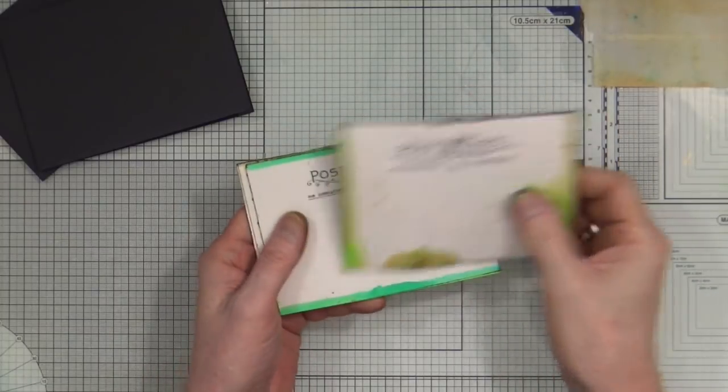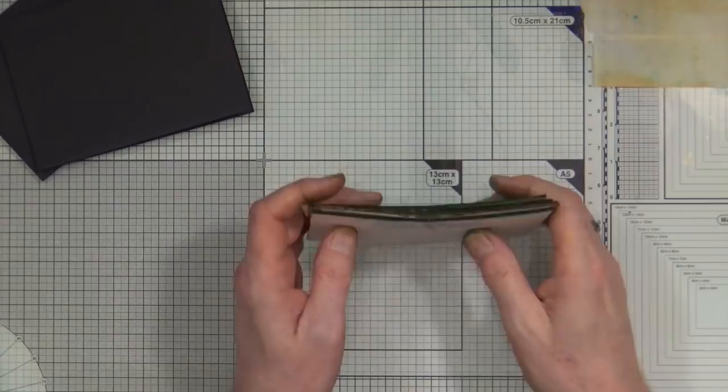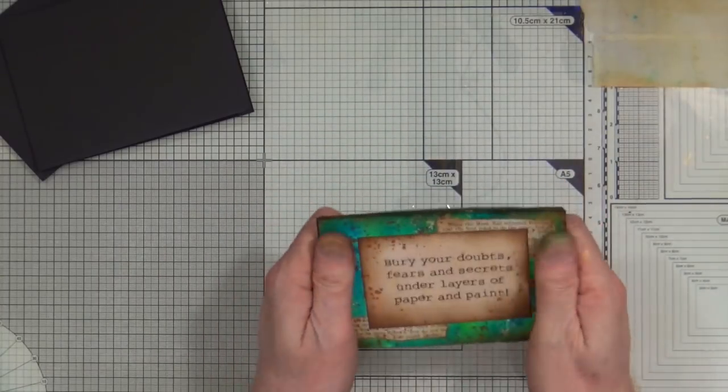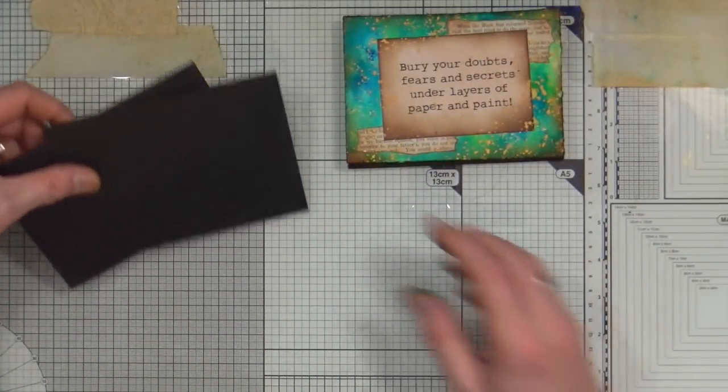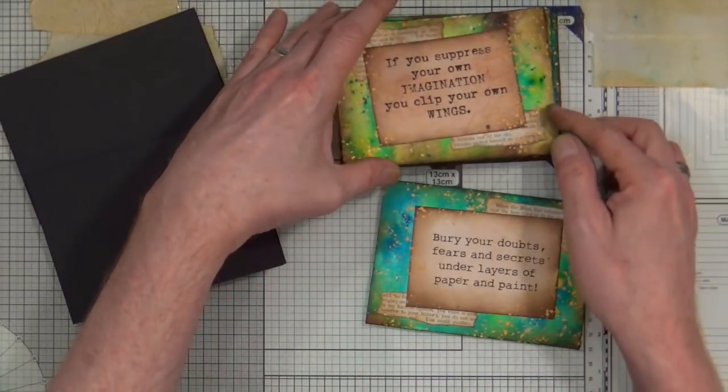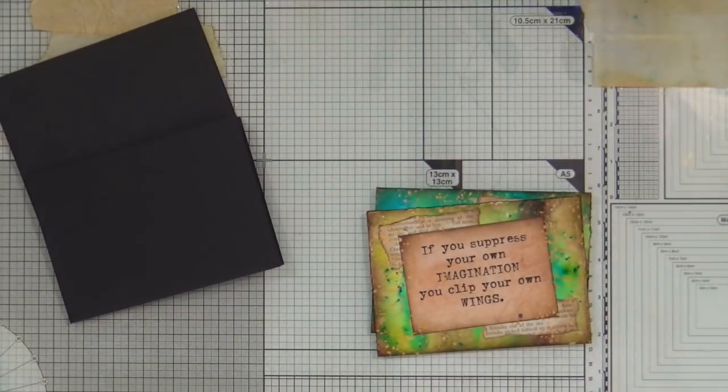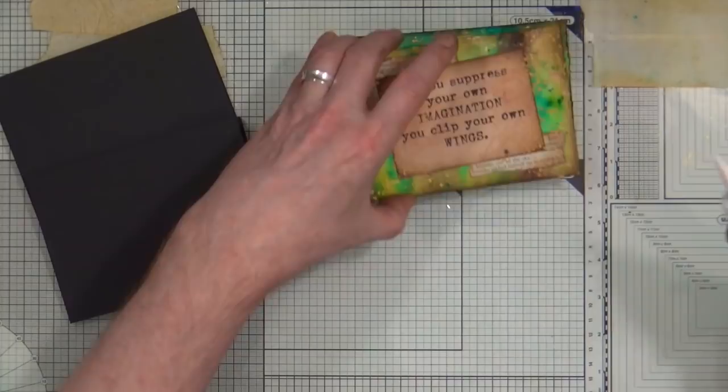So each one of those now has been stamped on the back with that postcard, but I could have saved myself two because I already know that I need two cards to send out already. So I'm just going to take those top two and pop those to one side, and I'm just going to grab some glue.